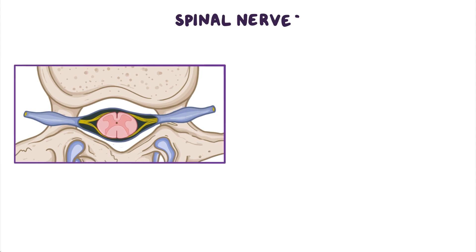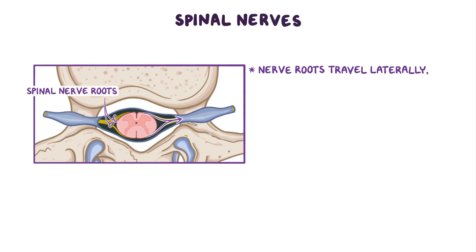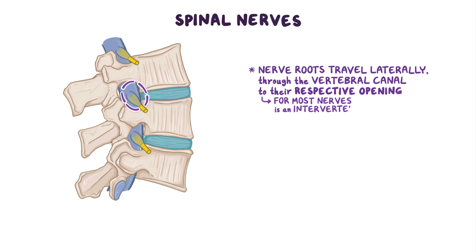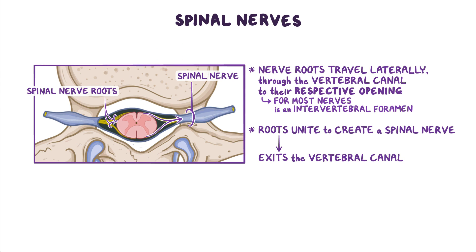Spinal nerve roots travel laterally from their spinal cord segment through the vertebral canal to their respective opening, which for most spinal nerves is an intervertebral foramen. Just before reaching the opening, the roots unite to create a spinal nerve, which then exits the vertebral canal.